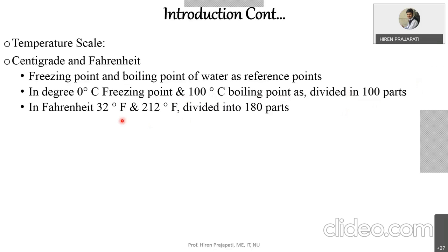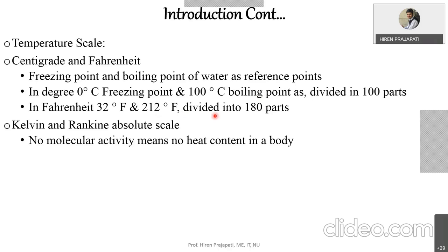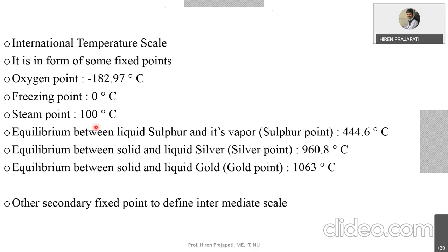Similarly, for Fahrenheit we use the freezing and boiling points of water as reference — 32°F to 212°F — divided into 180 parts, each giving 1 Fahrenheit. Kelvin and Rankine are the absolute scales, while centigrade and Fahrenheit are relative scales. Absolute temperature measurement is based on Kelvin and Rankine.